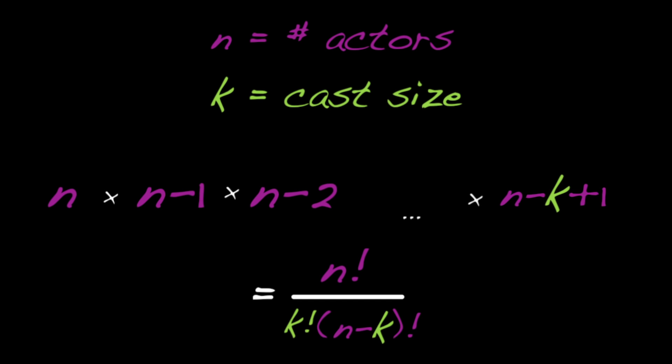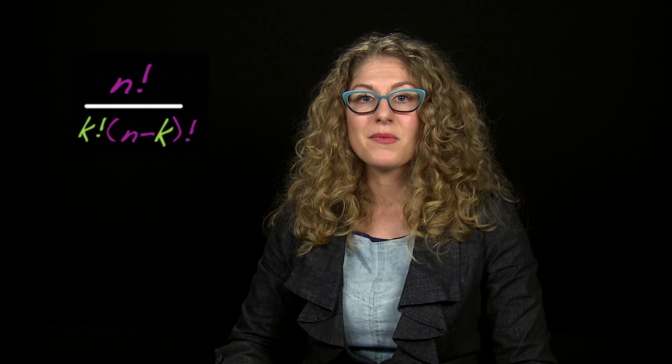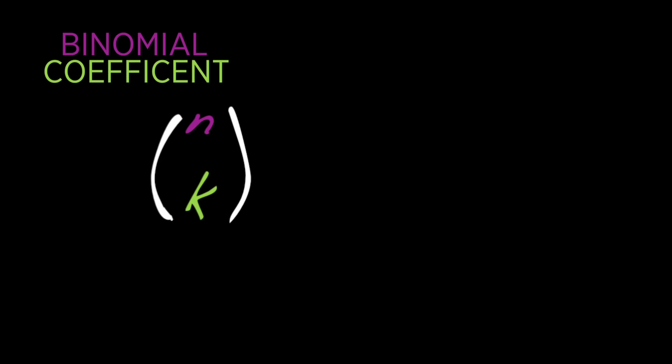So finally, we get to, wait for it, drumroll please, n factorial over k factorial times n minus k factorial possible casts of k actors chosen from a group of n actors total. This formula is so famous that it has a special name and a special symbol to write it. It's called a binomial coefficient. And mathematicians write it as n choose k equals n factorial divided by k factorial times n minus k factorial.